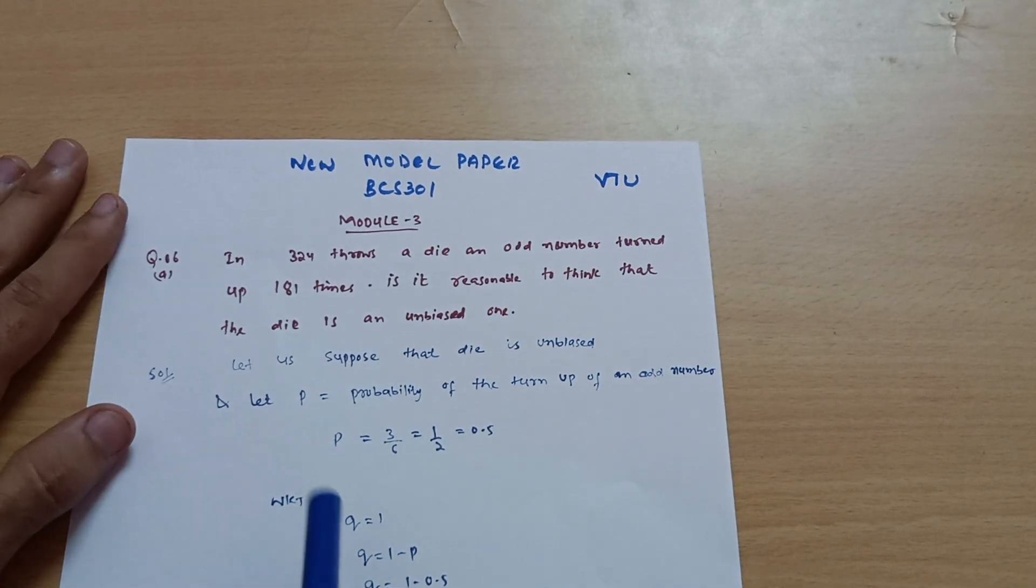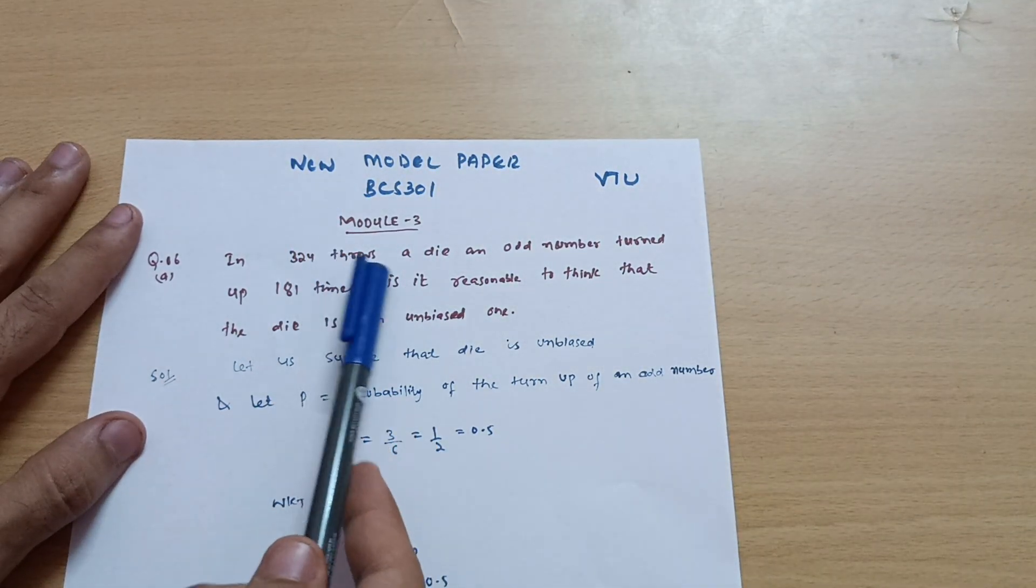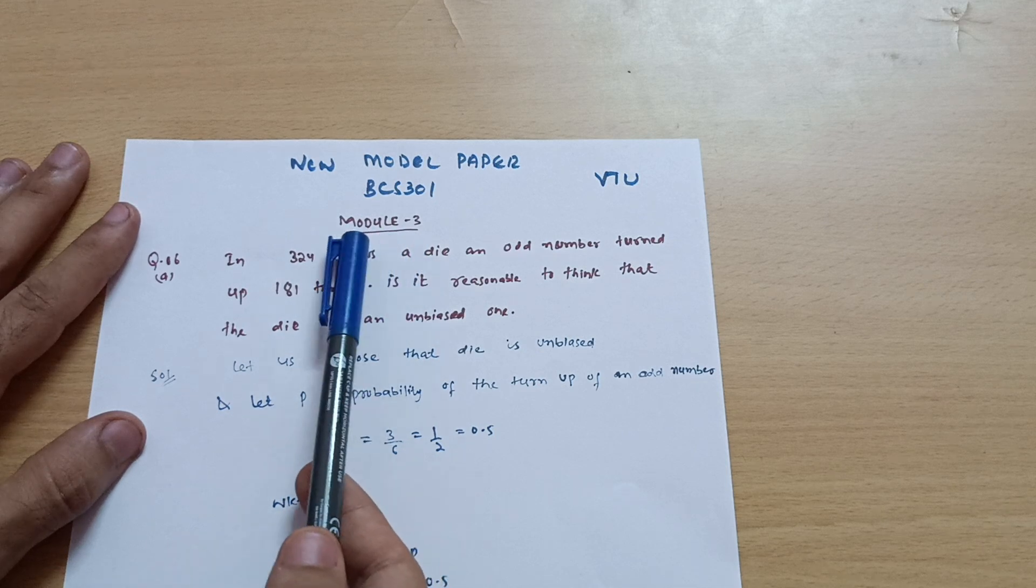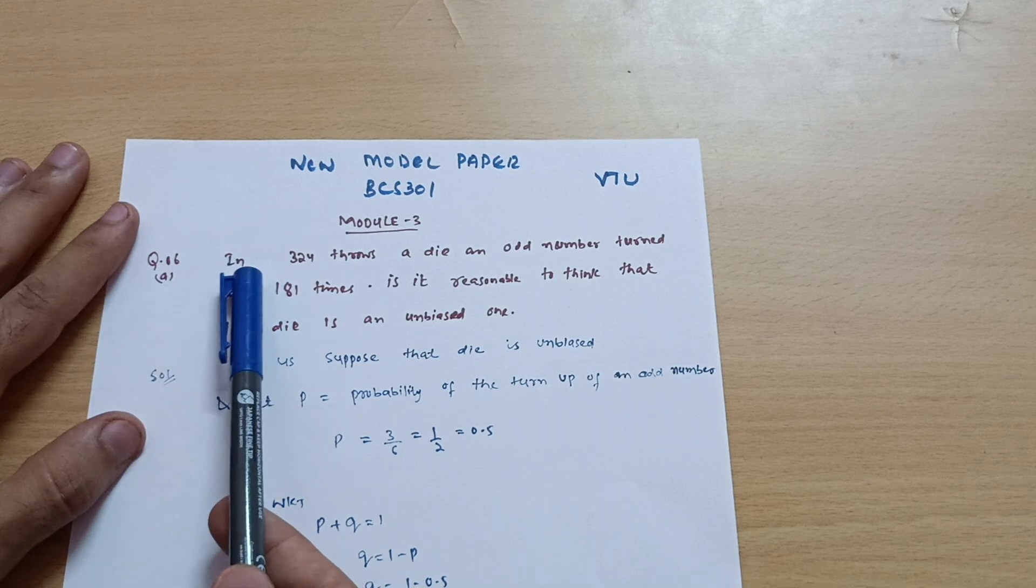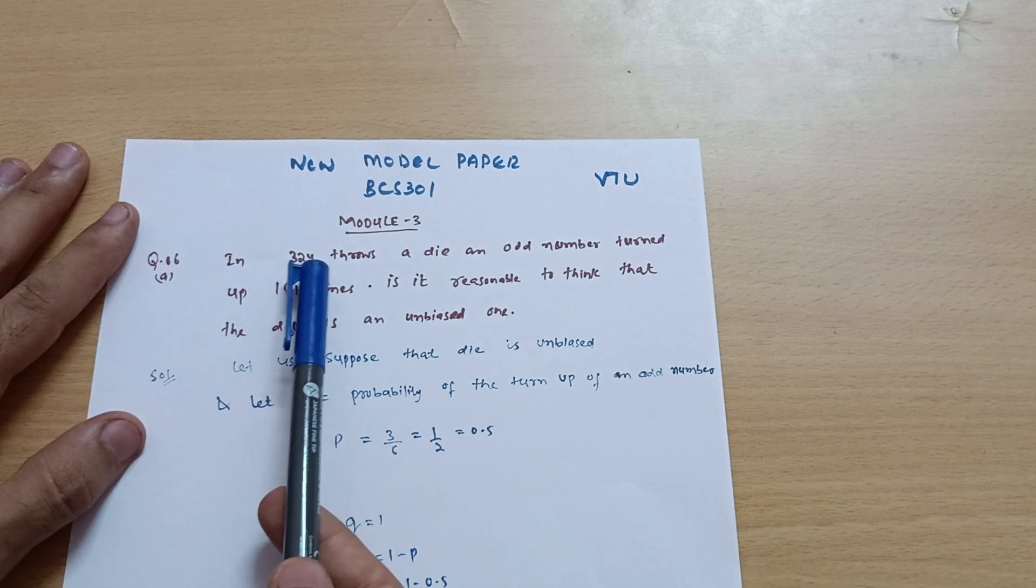Hello friends, welcome back. We are discussing the model question paper for CSC stream students, third semester. Today I will be explaining model question number 6a in BC6301.